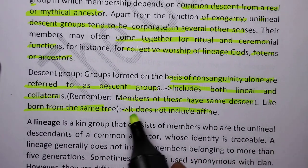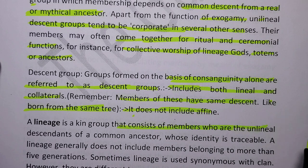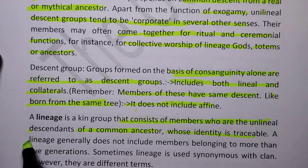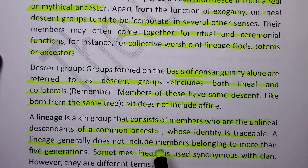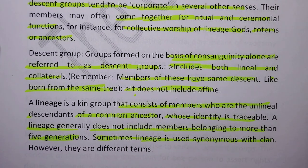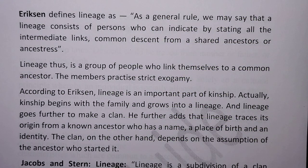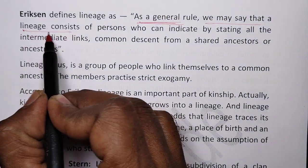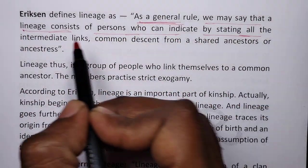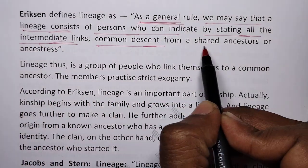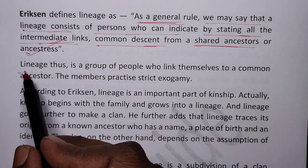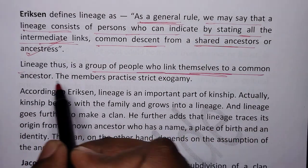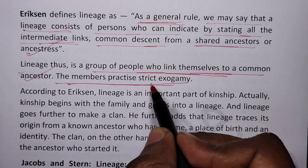A lineage is a kin group that consists of members who are unilineal descendants of a common ancestor whose identity is traceable. A lineage generally does not include members belonging to more than five generations. Sometimes lineage is considered synonymous with clan, however they are different terms. Erickson defines lineage as a group of persons who can indicate, by stating all the intermediate links, their common descent from a shared ancestor or ancestress. Members practice strict exogamy.